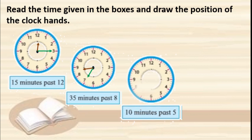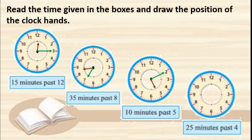Next: 10 minutes past 5. The minute hand should be on 2, and the hour hand should be between 5 and 6. Next: 25 minutes past 4. The minute hand should be on 5, and the hour hand should be between 4 and 5. Very good students.